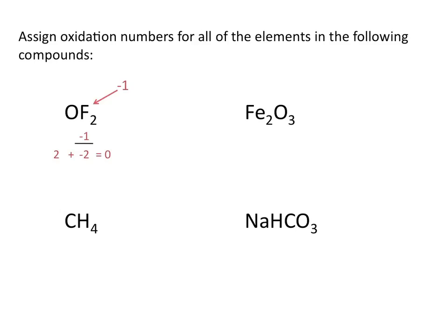This means that oxygen must have an oxidation number of plus 2, because plus 2 and minus 2 equals 0. So in this compound, fluorine has an oxidation state of minus 1, and oxygen has an oxidation state of positive 2.